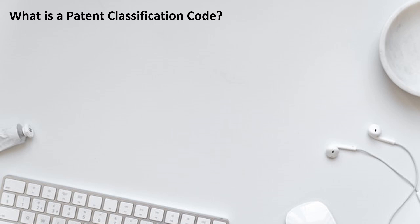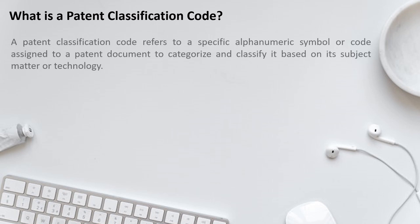What is a patent classification code? A patent classification code refers to a specific alphanumeric symbol or code assigned to a patent document to categorize and classify it based on its subject matter or technology. In simpler terms, a patent classification code is like a name or a set of names where each name includes patents of a specific domain or field. This is again very similar to the library example — names such as fiction, non-fiction, comics, or scientific literature serve like codes.